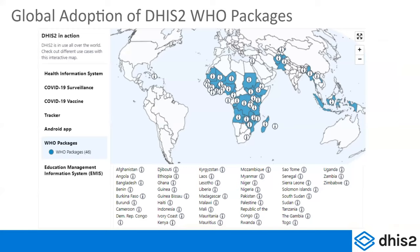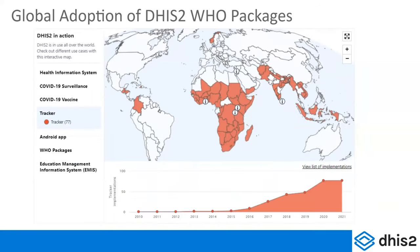As of our last counting, at least 46 different countries were using at least one of those packages. The tracker packages include HIV case surveillance, TB case surveillance, malaria elimination, vaccine registries, and many different COVID packages. If your country is among those 46, you should reach out to whoever was responsible for using the package and learn from them about the possibilities.